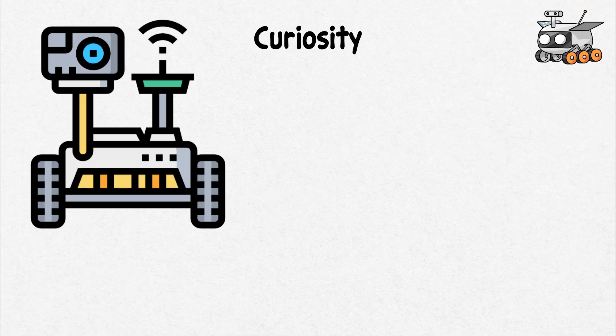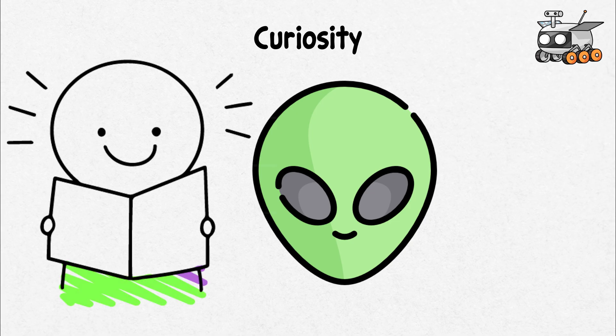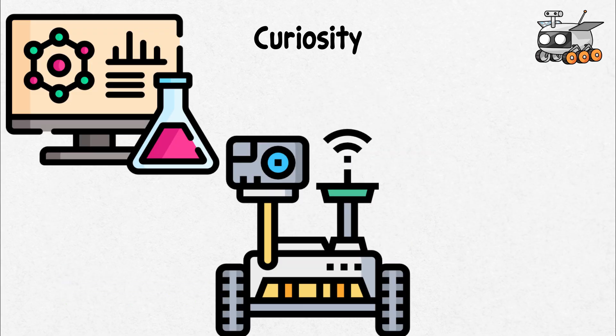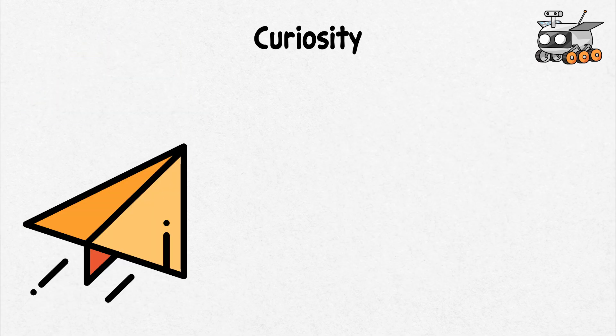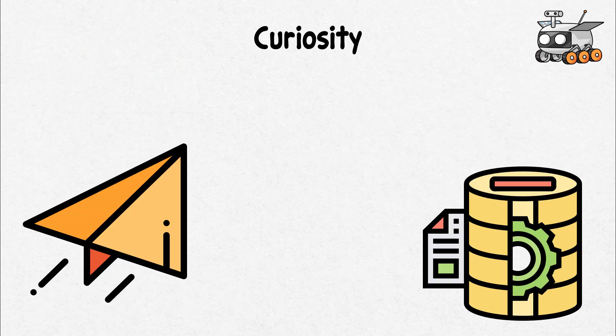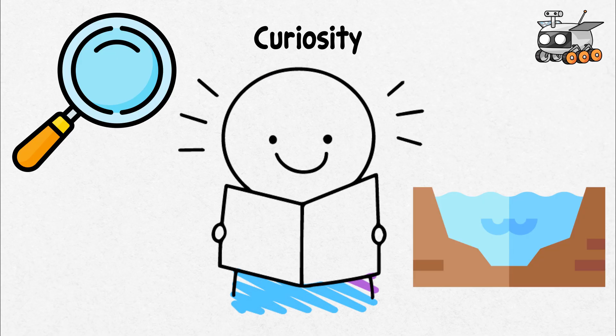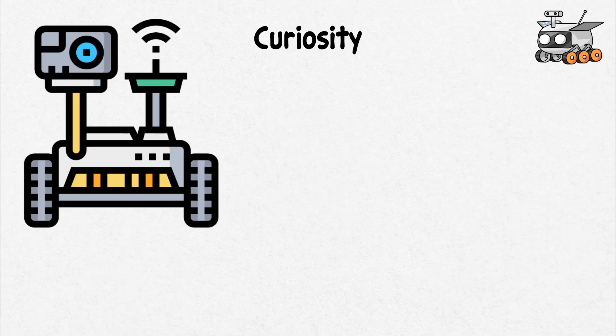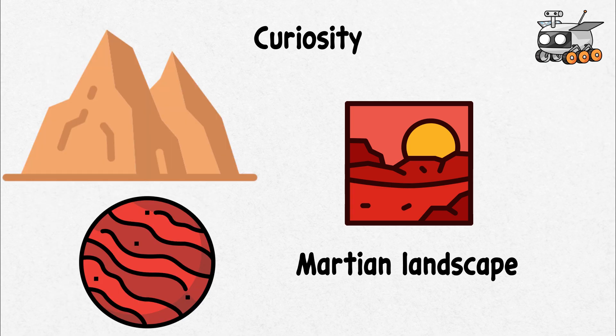This rover began its mission to explore Mars, seeking signs of ancient life and studying the planet's climate and geology. Curiosity's onboard lab allowed it to analyze soil and rock samples right on Mars, sending back detailed data and stunning images. One of its most thrilling discoveries was evidence of ancient riverbeds, suggesting that Mars once had flowing water. Curiosity's adventures continued as it roamed across the Martian landscape, climbing mountains and uncovering the planet's history.